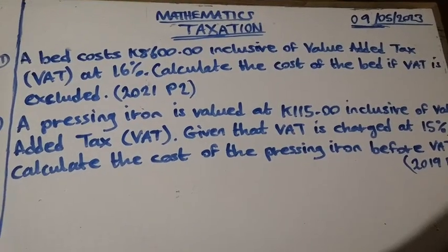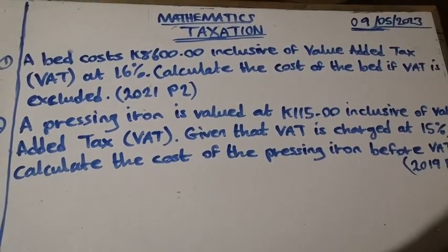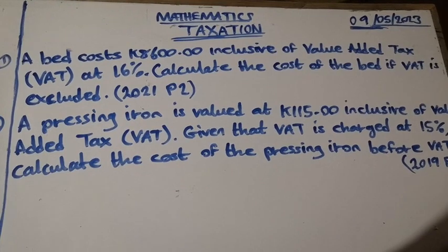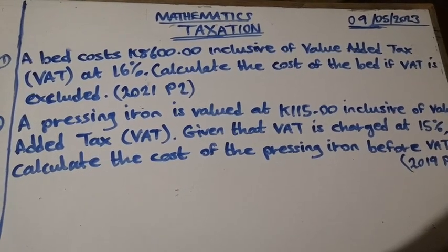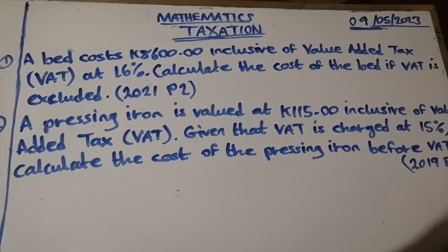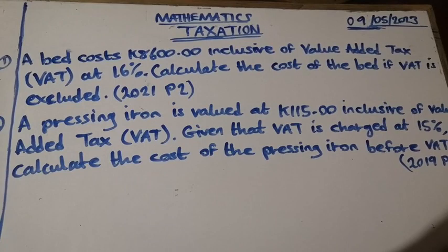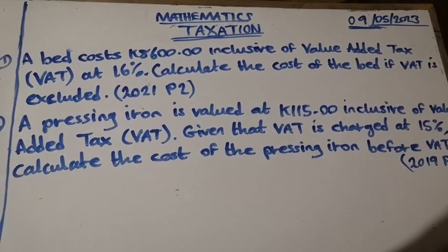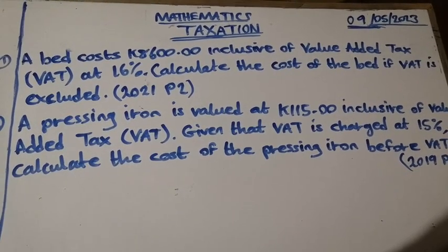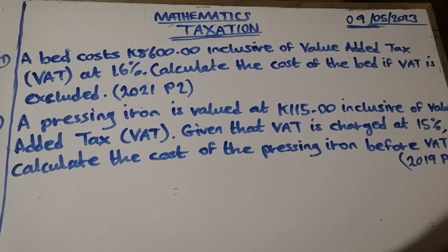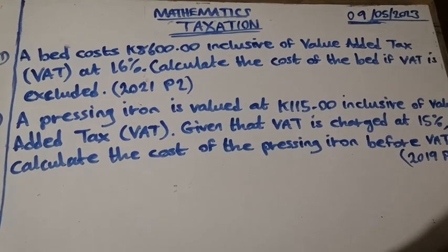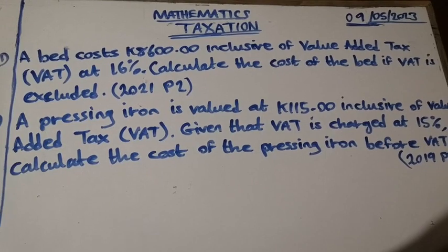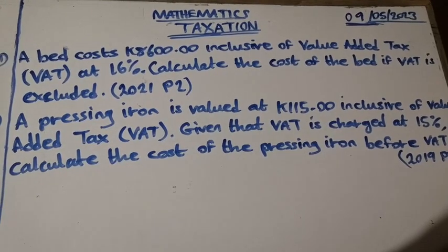A bed costs 8,600, inclusive of value-added tax, VAT at 16%. Calculate the cost of the bed if VAT is excluded.